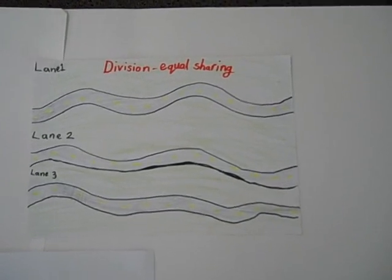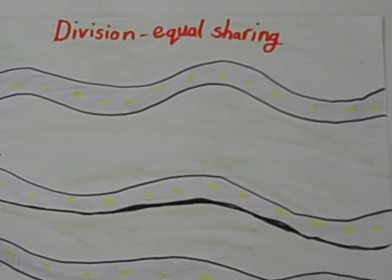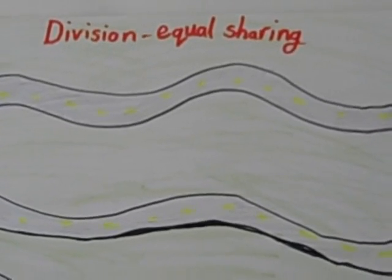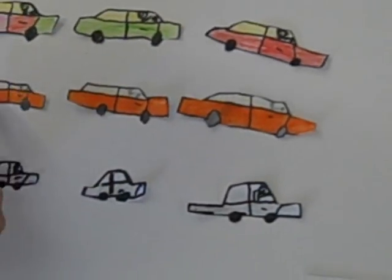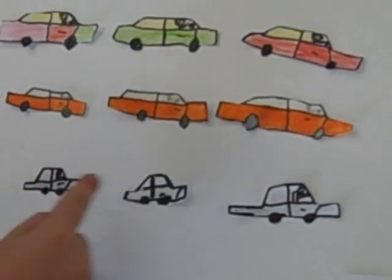We are here today to share our learning about division equal sharing. We have got 9 cars here. One, two, three, four, five, six, seven, eight, nine.